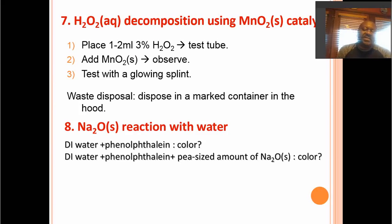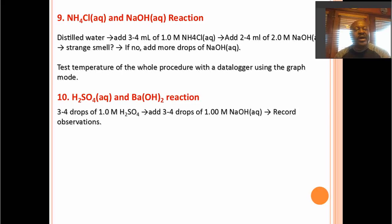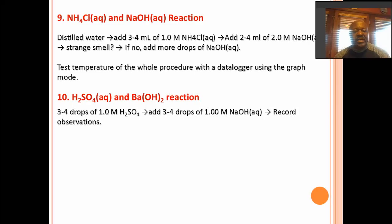Hydrogen peroxide using manganese — I just described that already, but you guys can observe it for real. Sodium oxide reacting with water is another fun one — make the observation, write one of the products, figure out the rest. Ammonium chloride and sodium hydroxide — you'll see that one maybe doesn't produce a visible reaction, but there's some minor temperature change you might otherwise miss. For that, we have you putting in a temperature sensor so you can observe whether the reaction is endothermic or exothermic. And sulfuric acid and barium hydroxide — do the same: make the observations and then write the reactions.